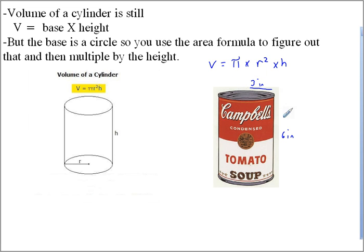So if I have an example here, this big old soup can, I would just figure out and plug in the formula. The pi times r squared is going to be, well, just plug this all in, times 3 squared times the height, which is going to be 6.